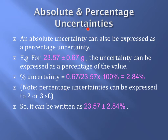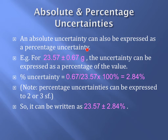An absolute uncertainty can also be expressed as a percentage uncertainty. You need to know how to convert an absolute uncertainty to a percentage uncertainty.